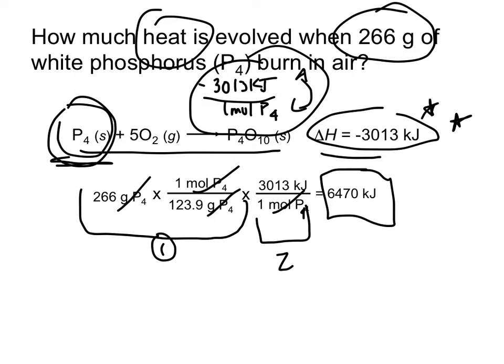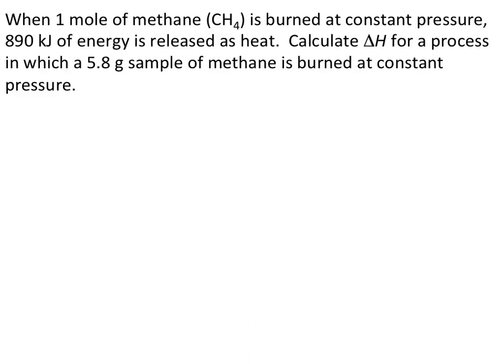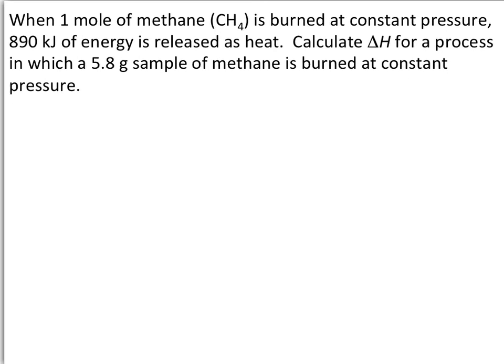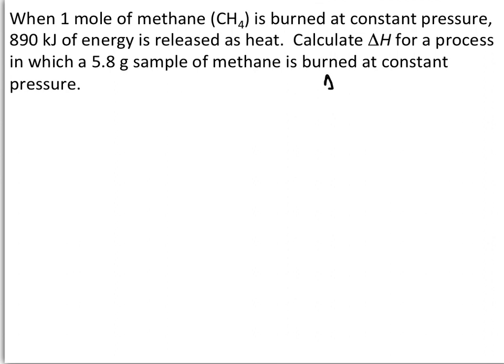Make sure you figure out the conversion factor based on the molar amounts from coefficients in the chemical equation and the enthalpy value. Then take the item you've been given, ensure it's in appropriate units, and convert to kilojoules or joules. The next problem: when one mole of methane is burned at constant pressure, 890 kilojoules of energy is released as heat. Calculate delta H for a 5.8 gram sample of methane burned at constant pressure.